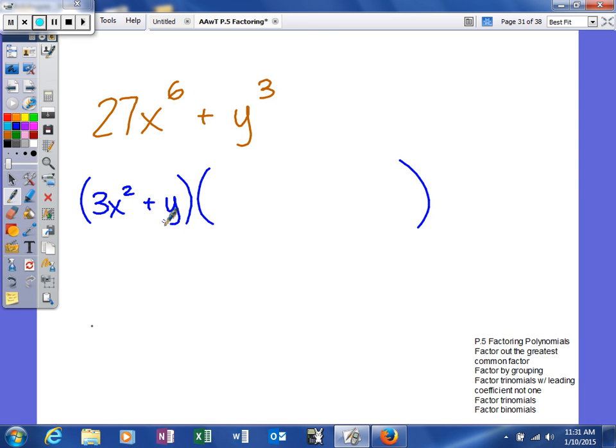All of your trinomial will be based off your binomial. So when I take this and square it to get the first term in my trinomial, that will give me 9x to the 4th. Multiply these two together and change the sign, so negative 3x squared y.